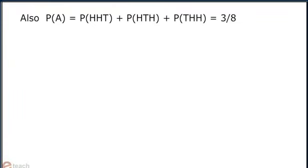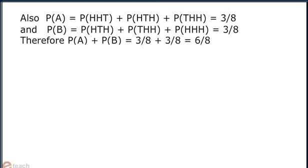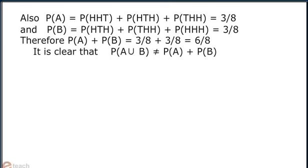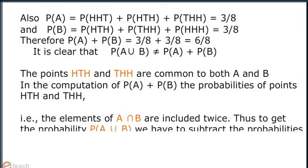Also, probability of A equals probability of HHT plus probability of HTH plus probability of THH, which equals 3/8. Similarly, probability of B is also equal to 3/8. Therefore, probability of A union B is not equal to probability of A plus probability of B. The points HTH and THH are common to both A and B. In the computation of probability of A plus probability of B, the probabilities of points HTH and THH, that is the elements of A intersection B, are included twice.